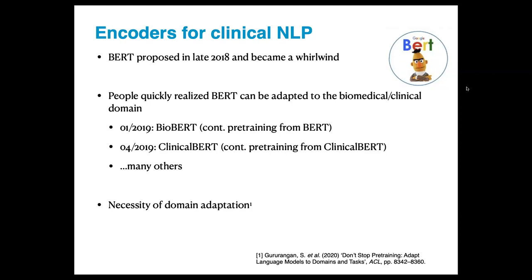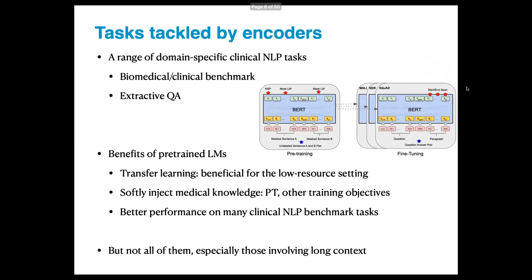The necessity of domain adaptation has been well studied in an ACL 2020 best paper from UW, showing that continued pre-training for BERT is essential for improved in-domain performance. These BERTs can be pretty flexible after pre-training on large corpora — you basically use the whole model and just change the top layers to fine-tune for clinical NLP tasks, including information extraction, text classification, and extractive question answering.